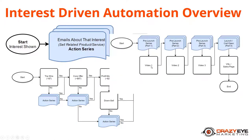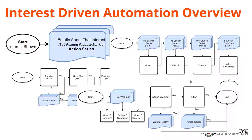With the product launch funnel, we might send a few emails to get them to watch video one, but if they watch it right away there's no point sending more emails for video one. So they enter the part-two email automation, which ends part one and tries to get them to watch video two. As soon as they watch video two, they move to part three, which ends part two. As soon as they watch video three, they go into part four, which ends part three and pushes people to the video sales letter or sales page.